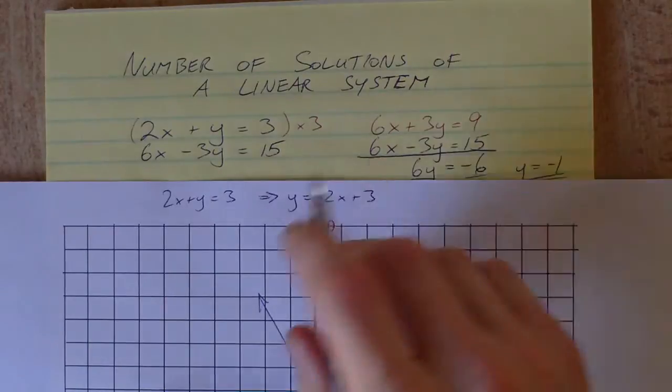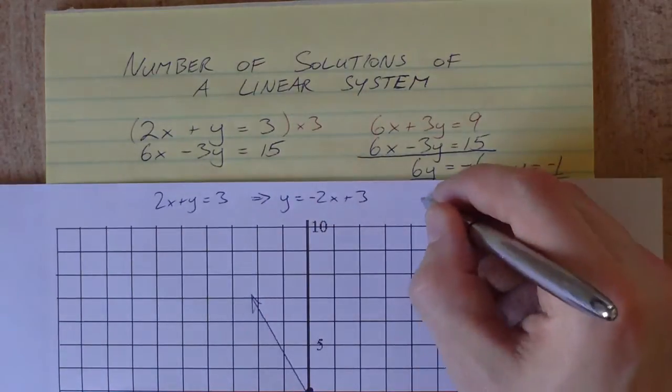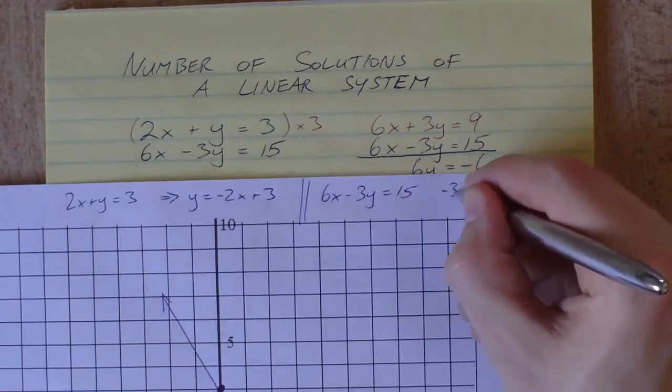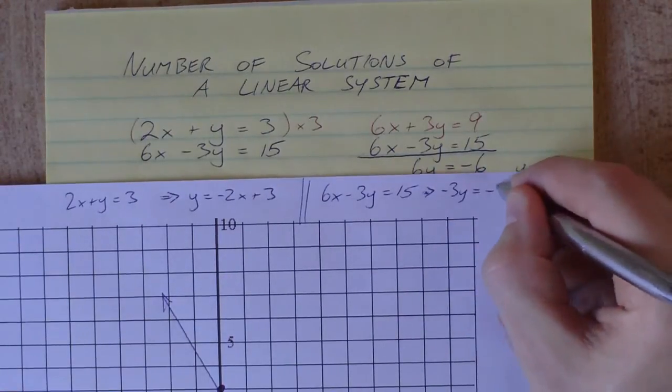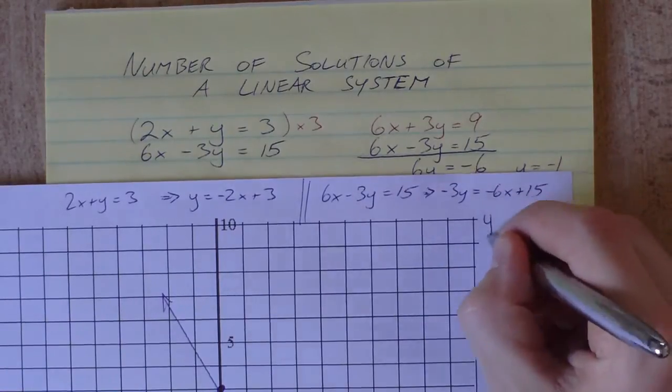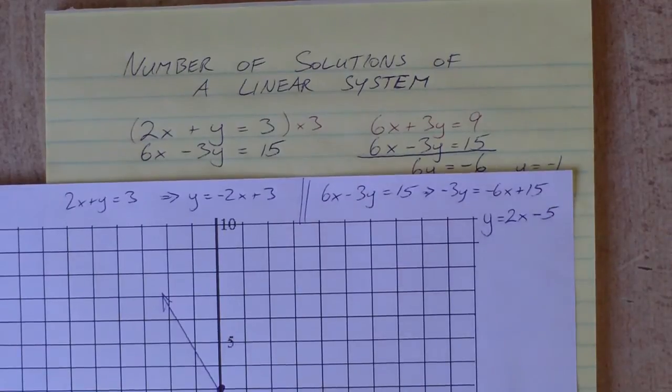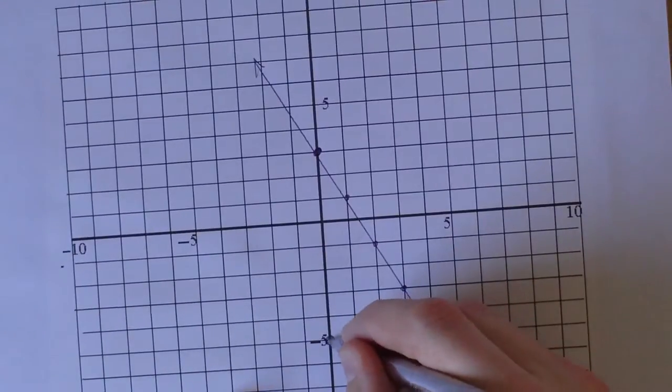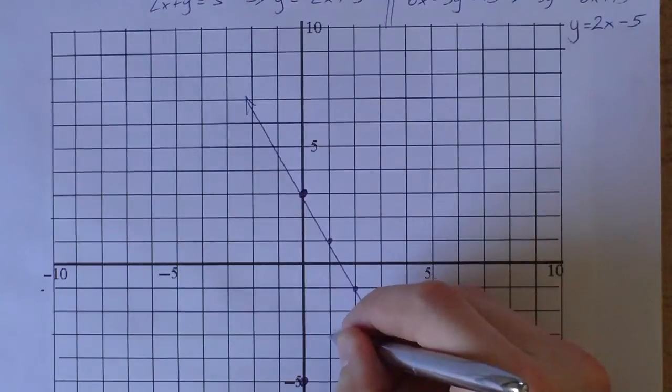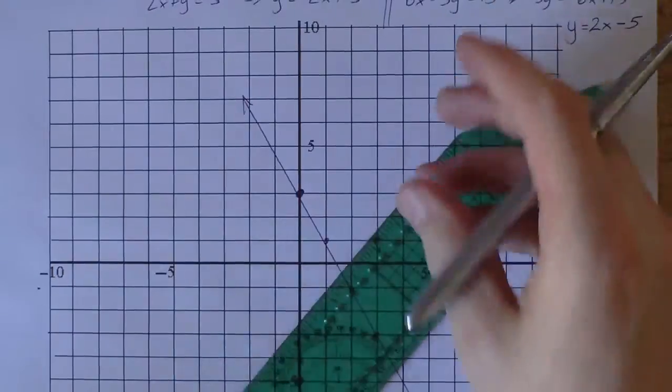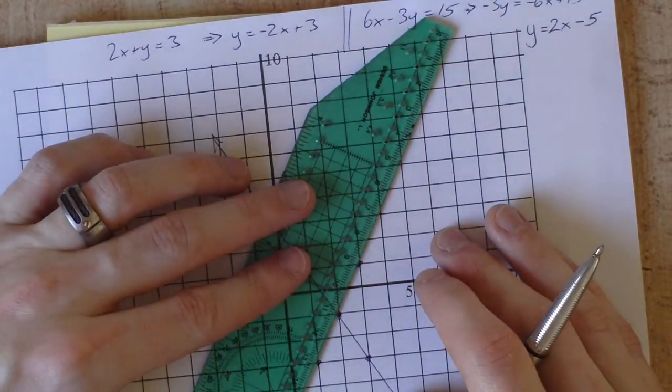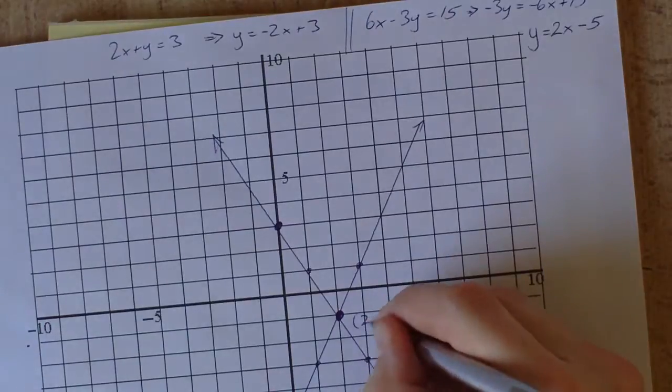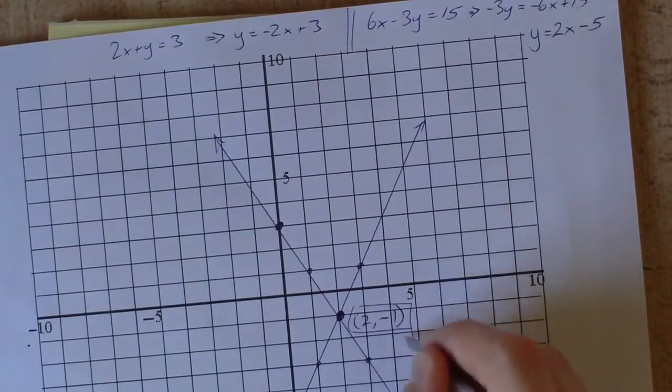Our second equation, 6x minus 3y equals 15, we solve for y: move the 6x over, negative 3y equals negative 6x plus 15. Divide everything by negative 3 and we get y equals 2x minus 5. Graph that line starting at the y-intercept of negative 5, slope of 2, up 2 and over 1. We can see that point is our intersection, our solution (2, -1), just like we found using the algebraic method.